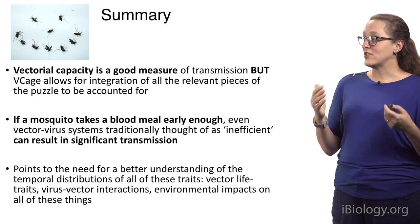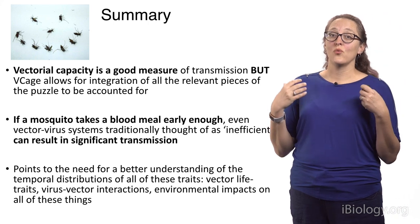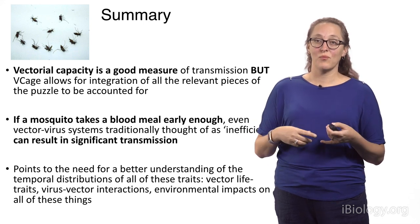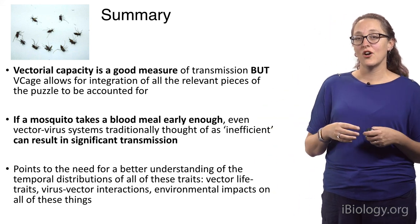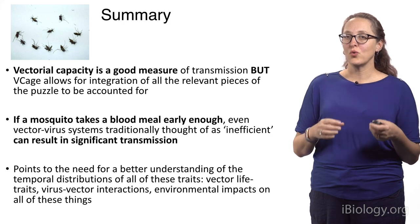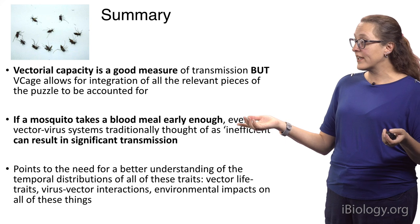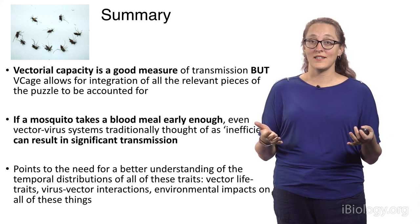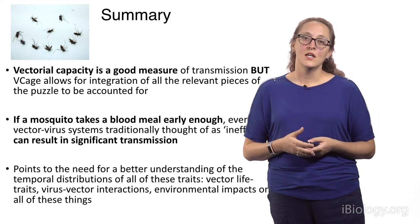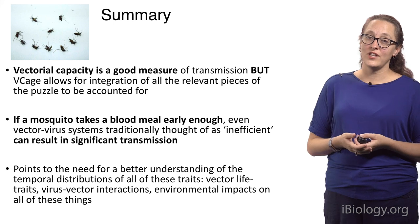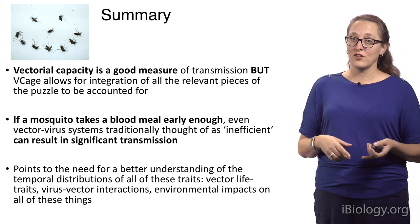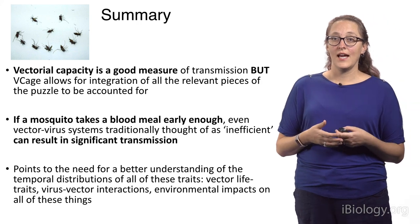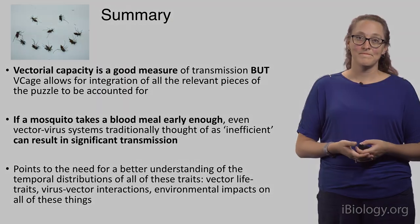So, what have we learned? Vectorial capacity is a good measure of transmission, but we need to also account for relevant pieces of the puzzle like life traits of the mosquito — mortality rates, biting rates — which all need to go into a framework for nuanced comparisons. We also learned that if a mosquito takes a blood meal early enough, transmission systems usually deemed inefficient may actually contribute to transmission in a significant way. More importantly, this points to our need for a better understanding of all the temporal distributions of vector life traits, vector-virus interactions, and environmental impacts on these. There are a lot of labs around the country, including mine, looking at this, and I'm excited to see where that literature goes in the next few years.